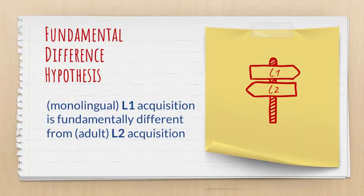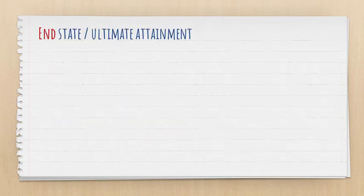What does it say? In a nutshell, it says that monolingual first language acquisition is fundamentally different from adult L2 acquisition — it's all about the differences between L1 and L2 acquisition. In the original article, Blay Broman talked about 10 differences between L1 and L2 acquisition, but the fundamental one is that the end state, or ultimate attainment as it is called in SLA, is different in L1 than L2.